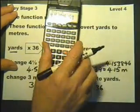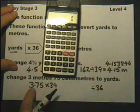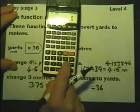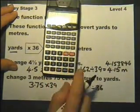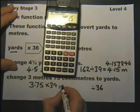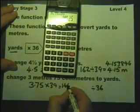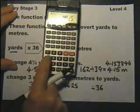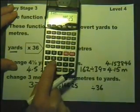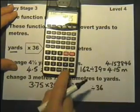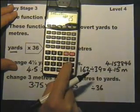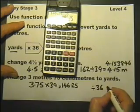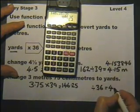So let's do that. Enter 3.75, multiply by 39 — the calculator window shows 146.25. Now do 146.25 divided by 36, and the answer comes out in the calculator window.